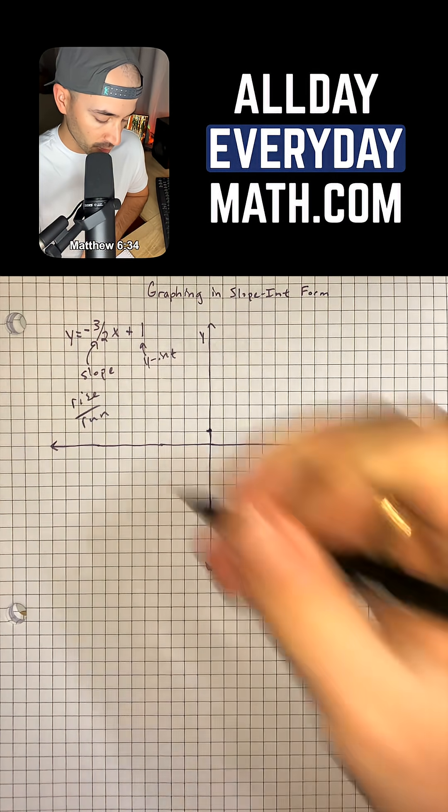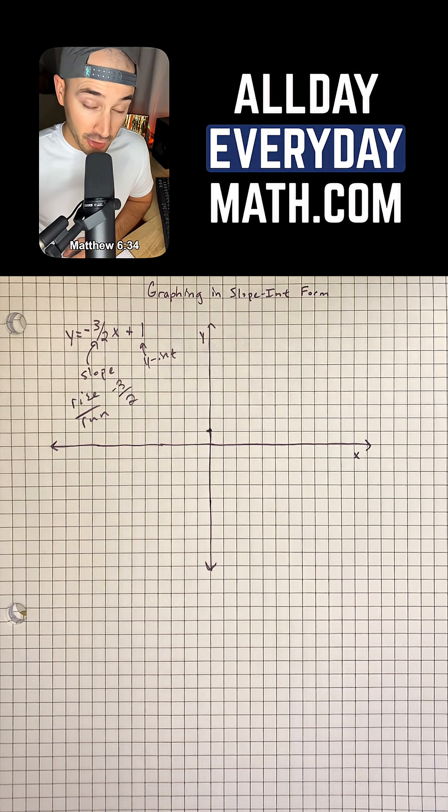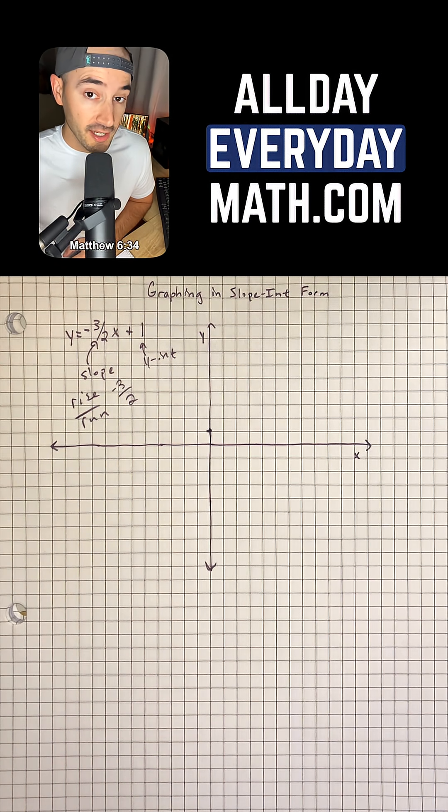So if our rise and run are negative 3 and 2, that means we're going to go down 3 and to the right 2.